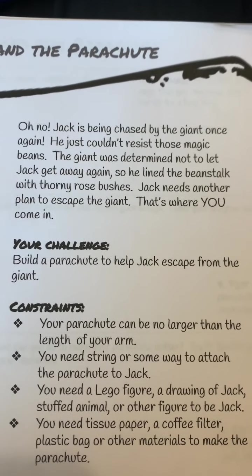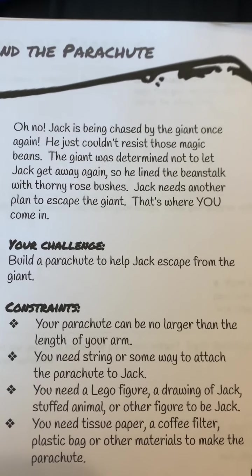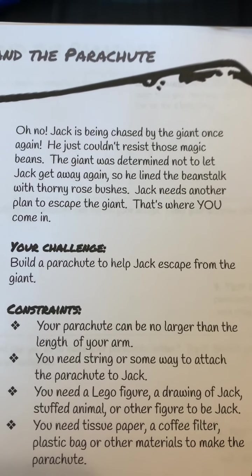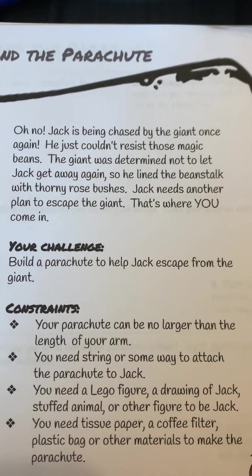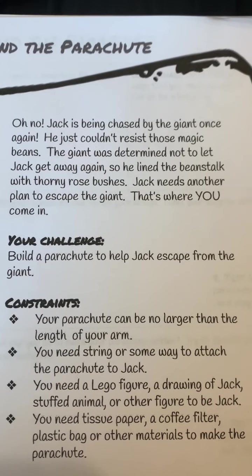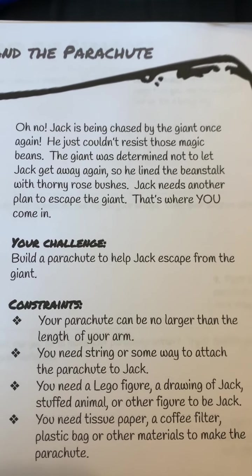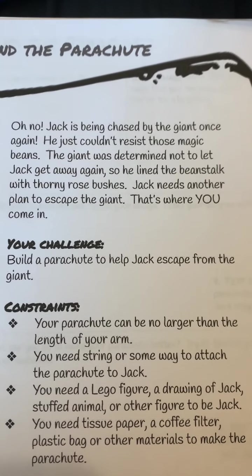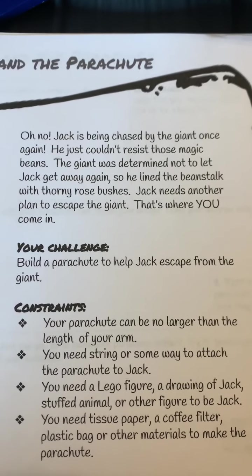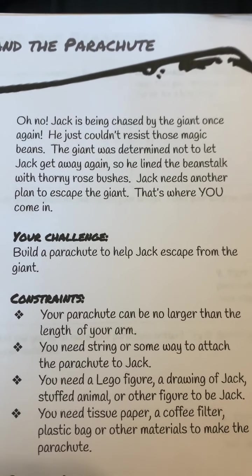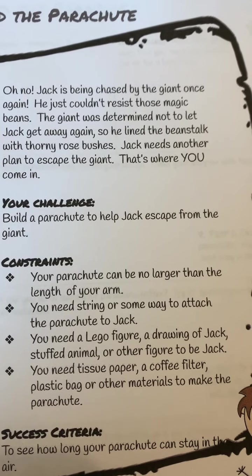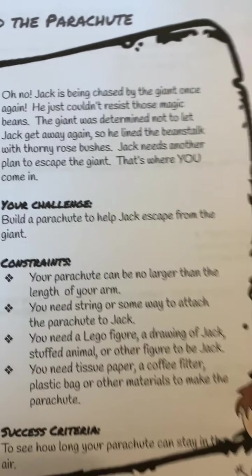Oh no, Jack is being chased by the giant once again. He just couldn't resist those magic beans. The giant was determined not to let Jack get away again, so he lined the Beanstalk with thorny rose bushes. Jack needs another plan to escape the giant — that's where you come in. Your challenge is to build a parachute to help Jack escape from the giant.